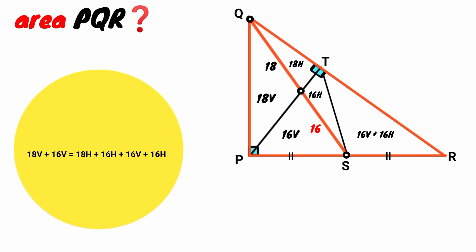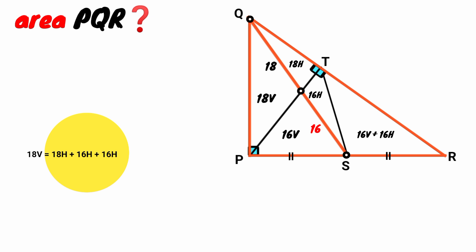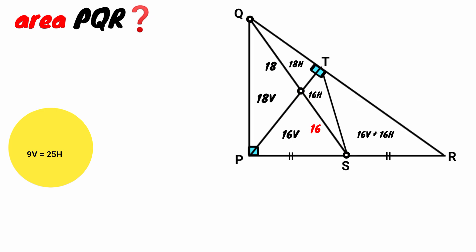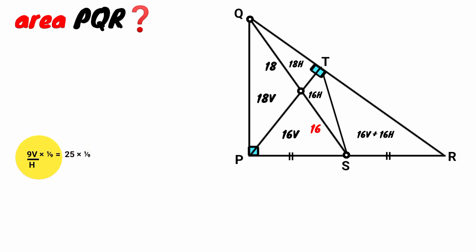Setting the areas equal: 18V plus 16H equals 18H plus 16H plus 16V plus 16H. The 16V terms cancel. Collecting: 18V equals 50H minus 16H, giving 18V equals 34H, which simplifies to 9V equals 25H. Dividing through by H and then by 9, we get V over H equals 25 over 9.